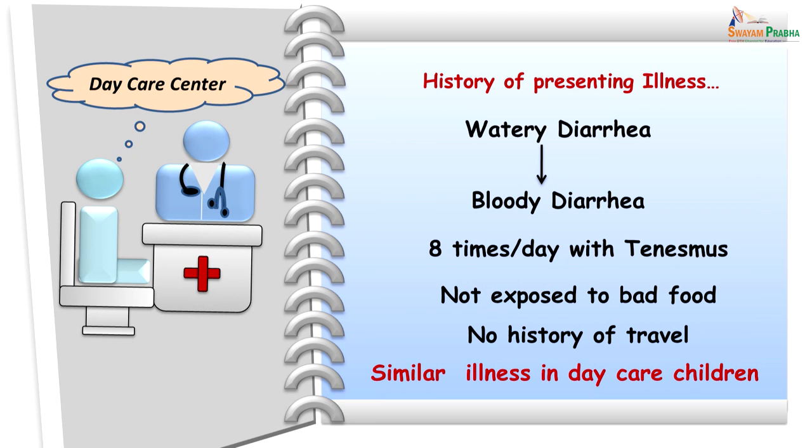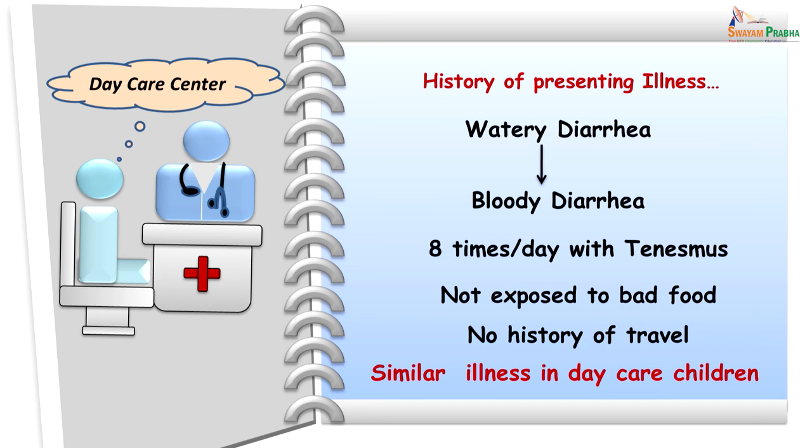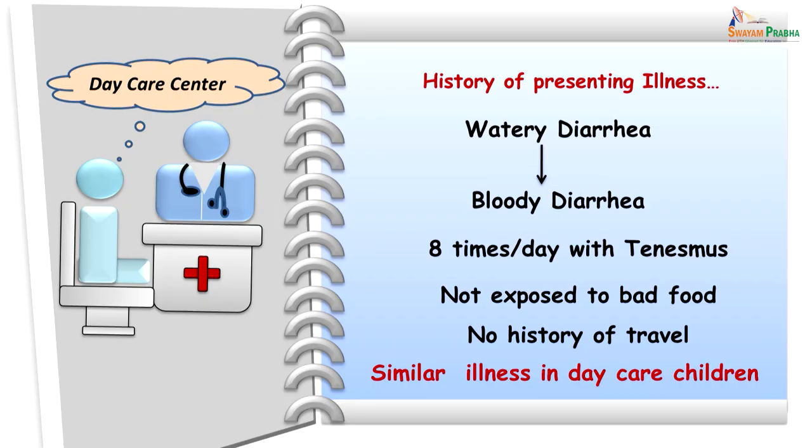She also had tenesmus — meaning Gowri had very severe abdominal pain associated with a feeling of evacuating the bowels in spite of the bowels not being full. Gowri was not exposed to any outside food and had no recent travel. One important point in the history is that children at the daycare center also suffered from the same kind of symptoms, as told to us by the parents.